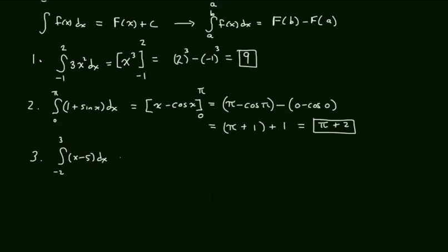Example 3. Negative 2 to 3 of x minus 5 dx. Antiderivative, x squared over 2 minus 5x. And from negative 2 to 3, middle step is notation.